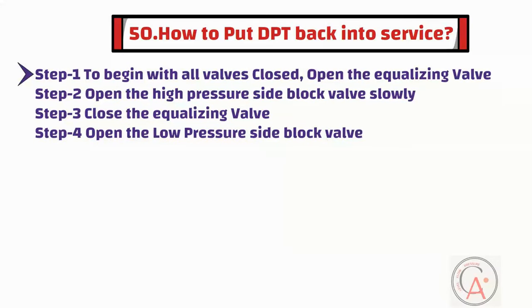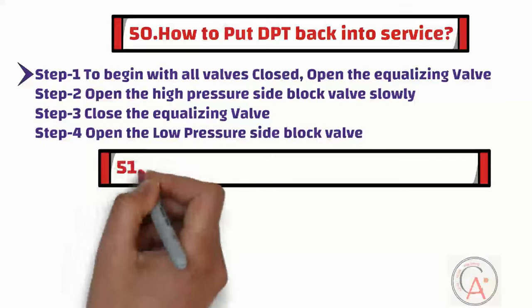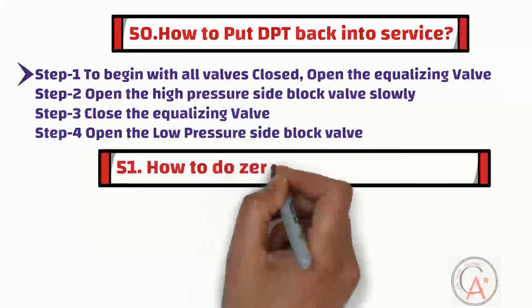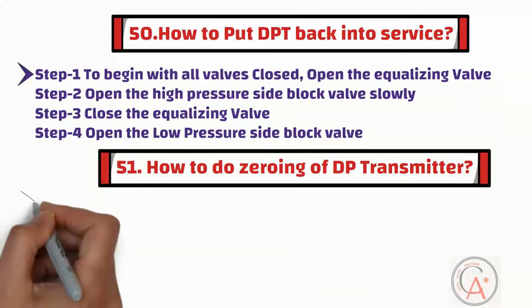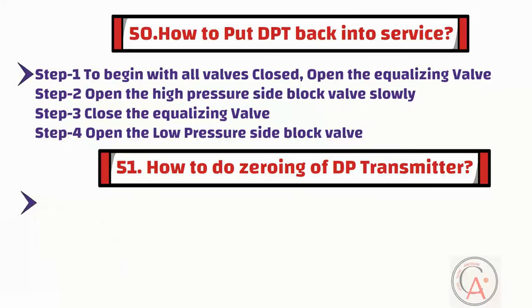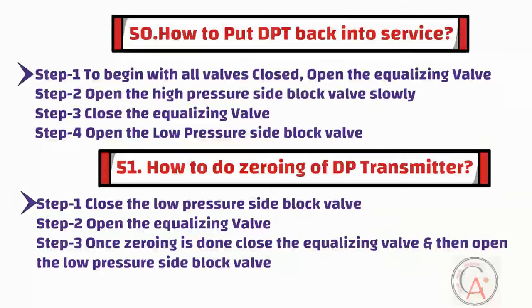Question fifty-one is: how to do zeroing of a DP transmitter? To do zeroing of the transmitter, first close the low-pressure side block valve. Then in step two, open the equalizing valve. Finally, once zeroing is done, close the equalizing valve and open the low-pressure side block valve.